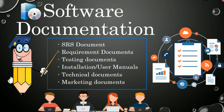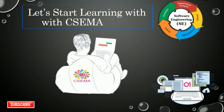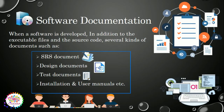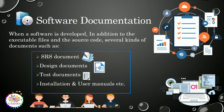All these documentations are developed as a part of the software engineering process. If you are not subscribed to CSCMA, please subscribe. When a software is developed, in addition to the executable files and the source code, several kinds of documentation are prepared, such as SRS documents, design documents, test documents, installation, and user manuals.